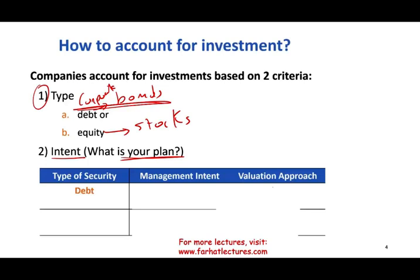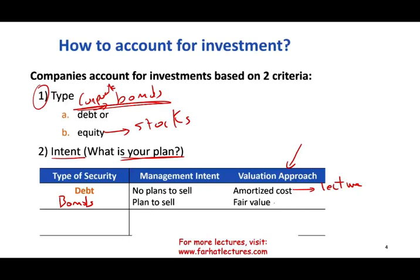If you invest in debt, which is bonds, you might have no plan to sell it — you want to hold it to maturity. In that case, you will account for it using the amortized cost method, and we're going to have a lecture about this topic. Or you have a bond and you plan to sell it — when you plan to sell it, you're going to account for it using fair value, and we'll have another lecture about that topic.